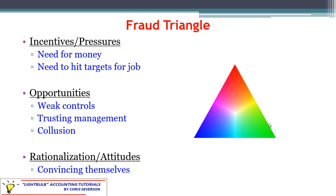The second element is opportunity. There has to be something that allows this person to commit fraud to begin with — they have to have some way into the system. They need access to the cash, access to the inventory, access to the records to update. This could be something like weak controls, where they take advantage of a weakness that gives them the opportunity to commit the fraud. Or you could have management that just really trusts them.